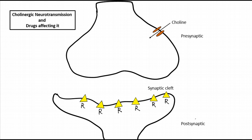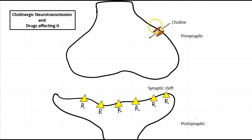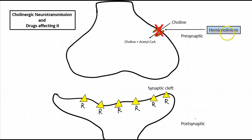The very first step of acetylcholine synthesis begins with choline uptake into the presynaptic neuron. This choline uptake is mainly carried out by the choline transporter, and this transporter is inhibited by a drug called hemicholinium.